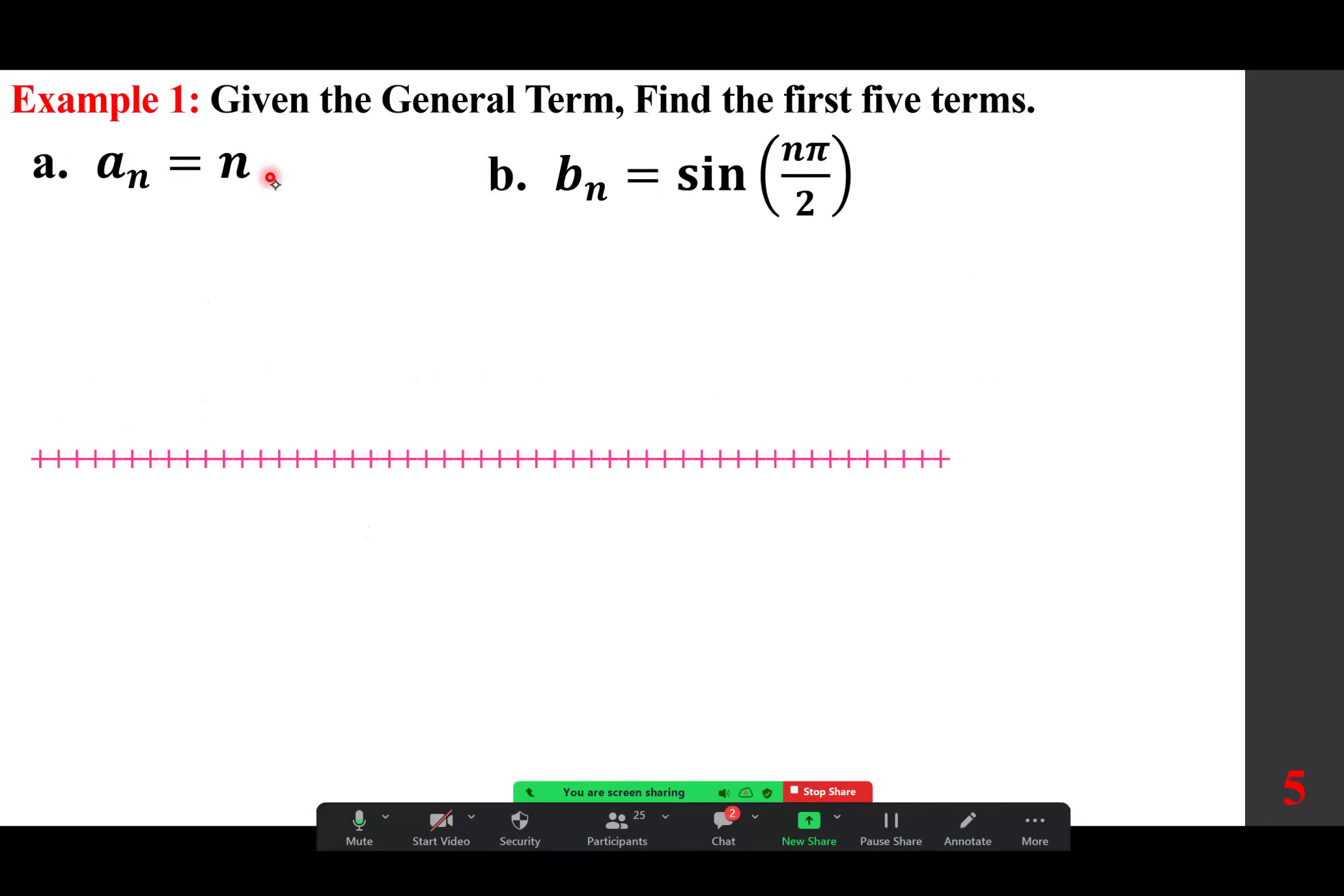Now, we want to work on this simple example, a sub n equals n. For example, if we choose n equals 1, can anybody tell me if n equals 1, what we get here? If we choose this one to be 1, this becomes 1. If we choose this one to be 2, this becomes 2. So a sub 1 is 1, a sub 2 is 2. That means we have 1, 2, 3, 4, 5 because we are interested in the first 5 terms.